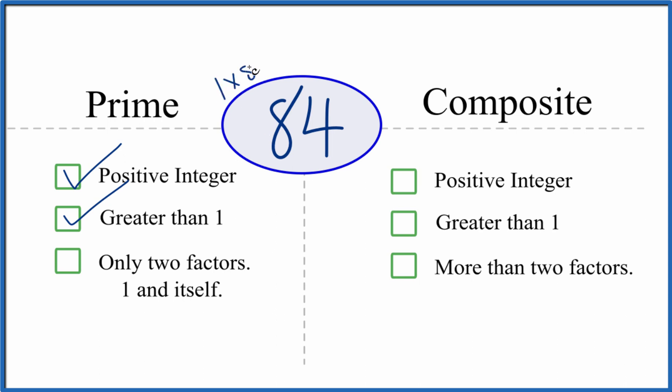So we know 1 times 84, that equals 84. But are there any other? Since it's an even number, we know that we're going to have 2 times 42. Those would be factors of 84.